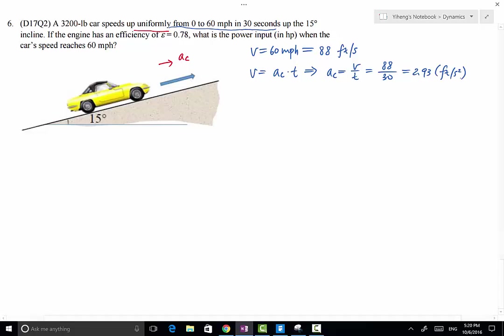Now, if we want to determine the power input, we're going to determine first the power output. And the power output equals the force, which is actually a frictional force that makes the car move up this incline, multiplied by the speed of the car. So we already know the speed of the car is 88 foot per second. Now we need to determine this force.